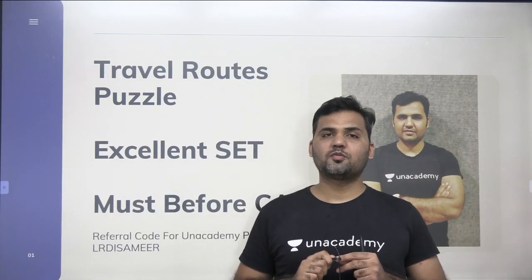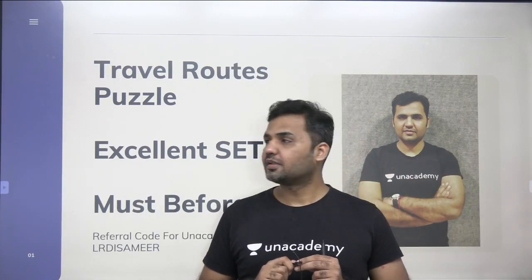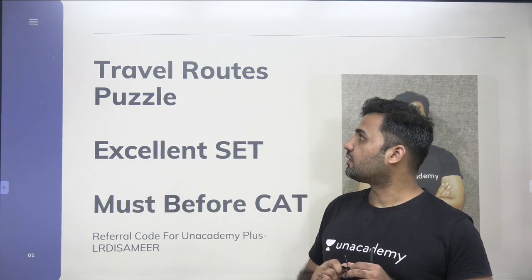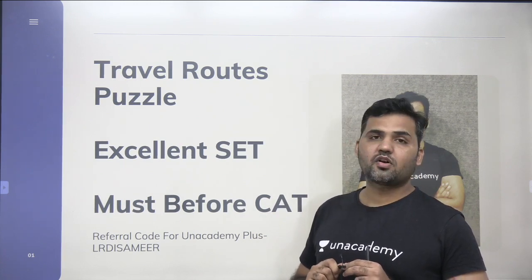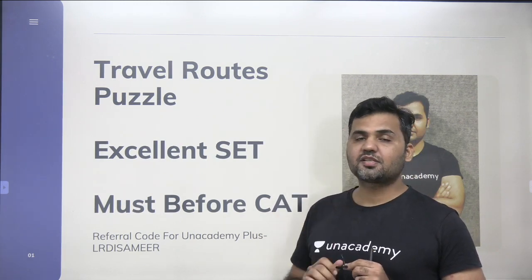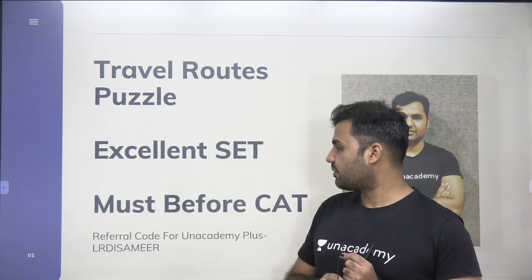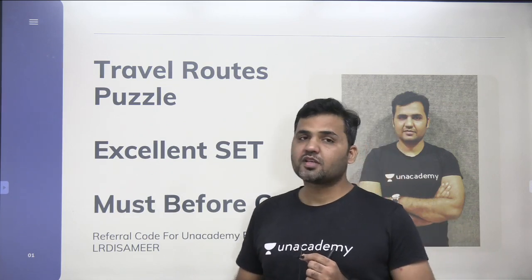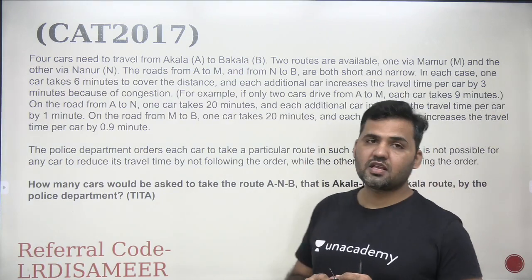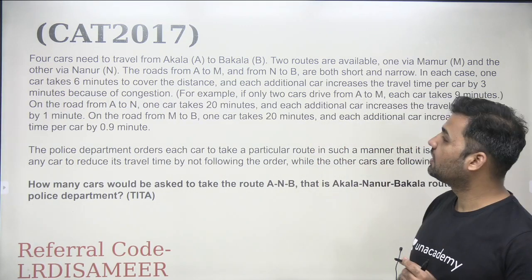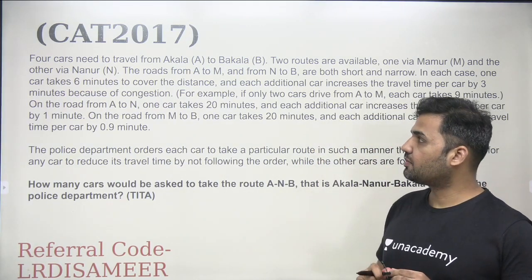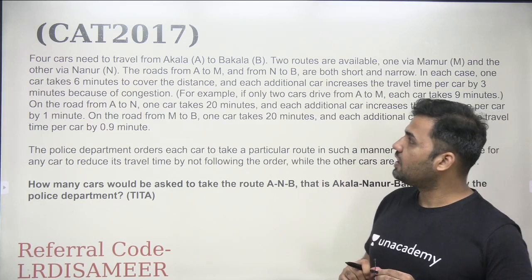Hello everyone, welcome to LRDI Prep. My name is Samir. In this video we are going to cover a travel route puzzle — an excellent puzzle from the previous year CAT paper. This is a set from CAT 2017 which we are going to cover in this session. Let's have a look at the instruction: four cars need to travel from Akala to Bukala.